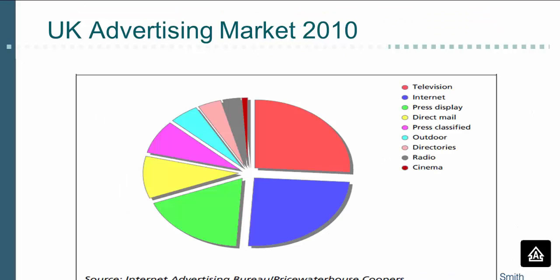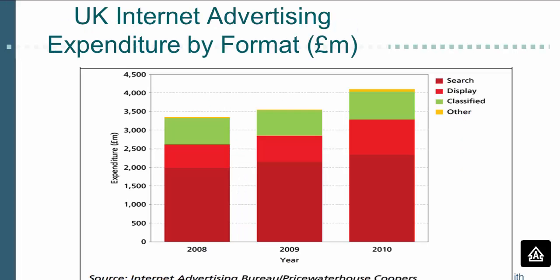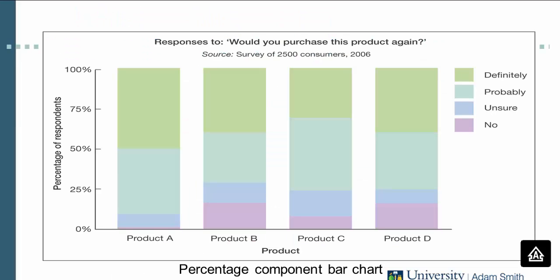Here is a pie chart, for example, that shows the UK advertising market in 2010. Here is a bar chart that records absolute quantities — in this case advertising expenditure. And here is another bar chart that shows relative quantities, in this case the relative percentage.